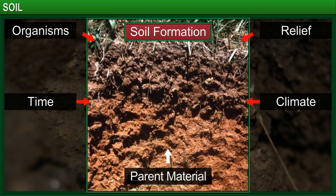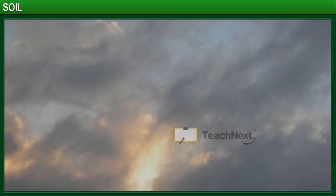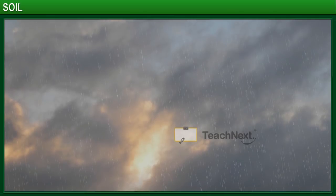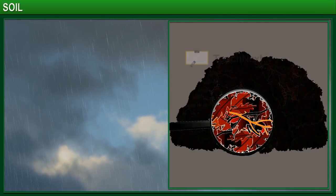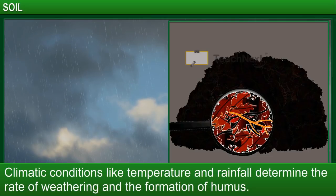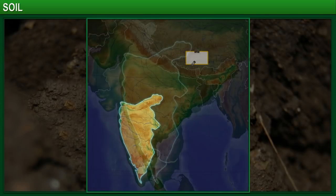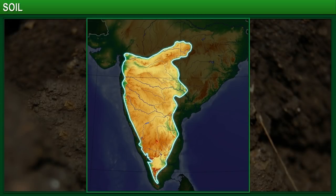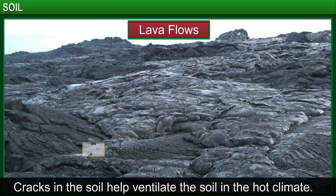The second factor that determines soil formation is climate. Climatic conditions like temperature and rainfall determine the rate of weathering and the formation of humus. For example, the soil in the Deccan plateau region in India is mostly made up from lava flows and is sticky. Since that region is very hot, the soil tends to develop long cracks, which helps to ventilate the soil.